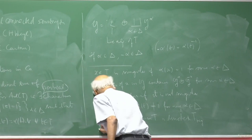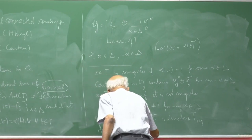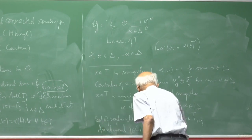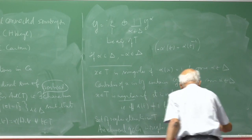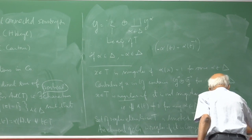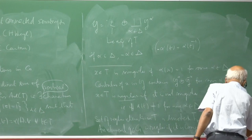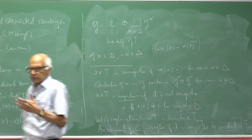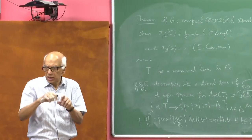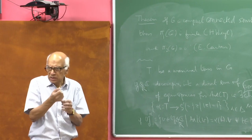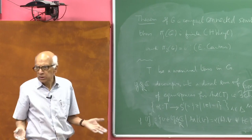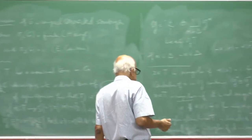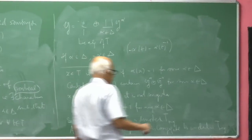The set of regular elements in T is denoted T_reg. An element g ∈ G is regular if it is conjugate to an element in T_reg. G_reg denotes the set of regular elements in G. The map φ: G × T → G defined by φ(g, t) = g t g⁻¹ is surjective since every element of G has a conjugate in the torus.